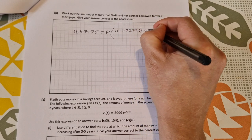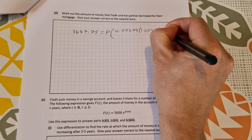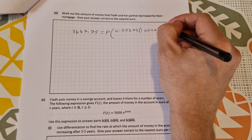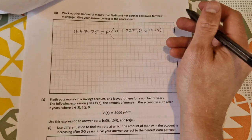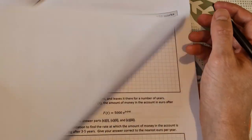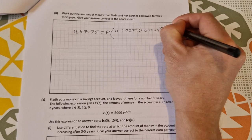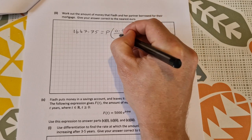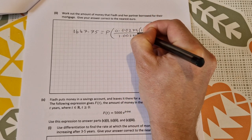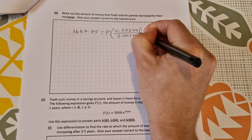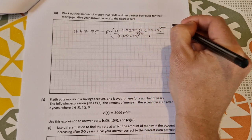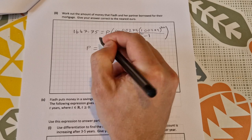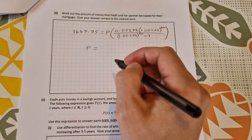It's 300 repayments - 25 times 12, it was a 25 year mortgage - so to the power of 300. And then we divide by 1.00279 to the power of 300 minus 1. Filling it all in, isolate P on its own. P is going to be equal to this divided by this, and you'll be able to put that into your calculator.